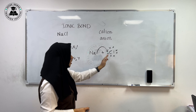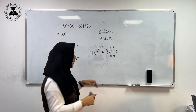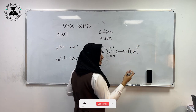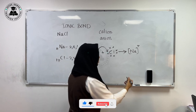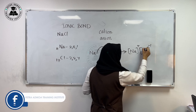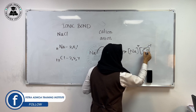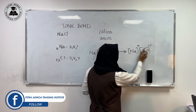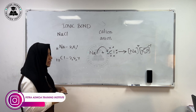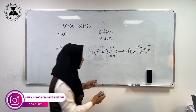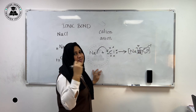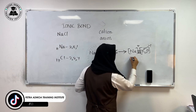Sodium loses one electron, whereas chlorine gains one electron. So sodium is converted into a sodium plus ion — one electron is lost, so it will have a positive charge. And chlorine will have a negative charge. Now there are 8 electrons in the chlorine atom; it is converted into a chloride ion, and the 8th electron was given by sodium. Whenever a positive ion and a negative ion come together, there will be a strong electrostatic force of attraction between these two, and that is known as an ionic bond.